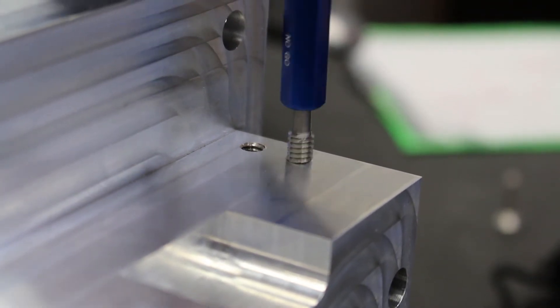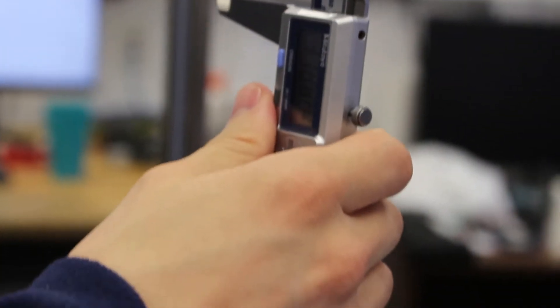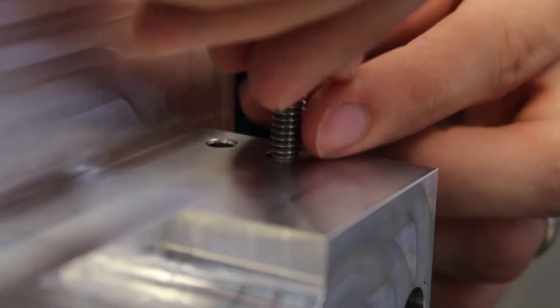This is one of the first things that our inspectors check for. Thread depth can be checked with calipers and a mating piece, a go no-go gauge, or if the hole is deeper than the gauge allows you can use an off-the-shelf screw.